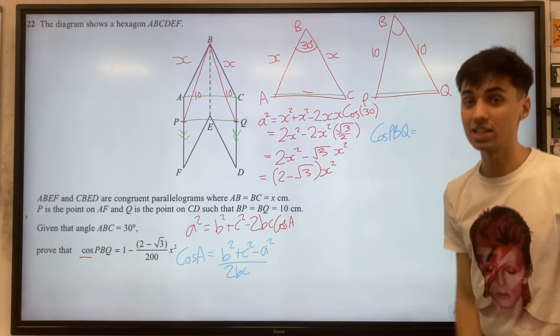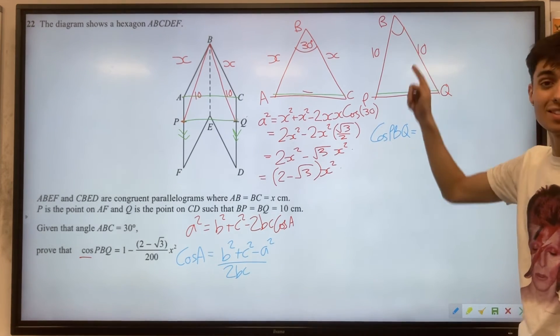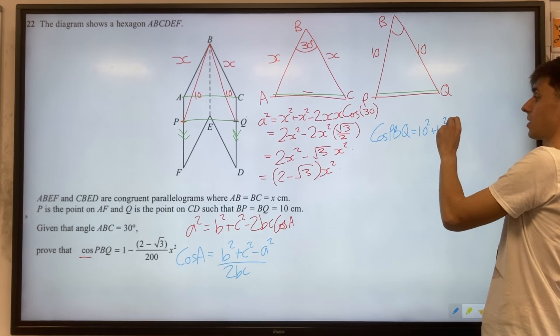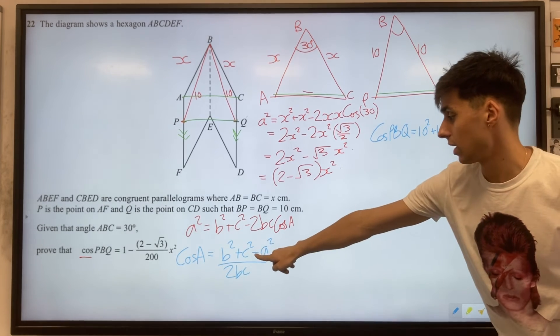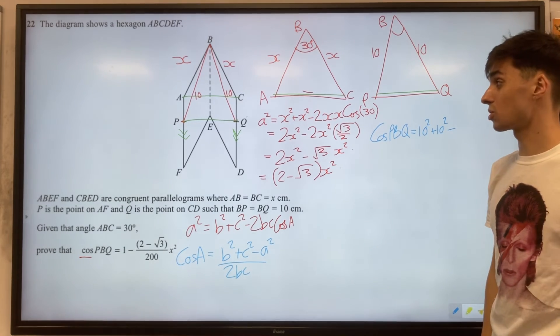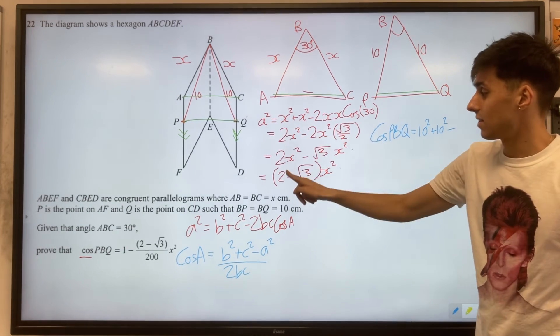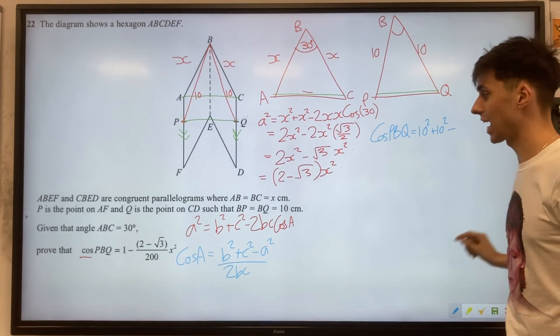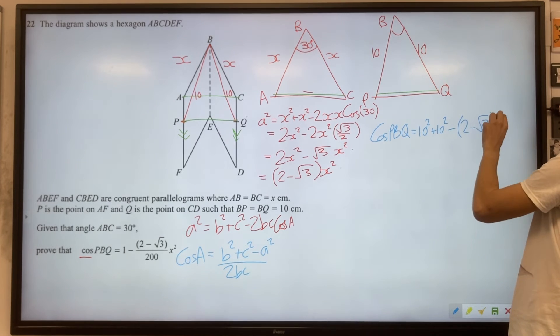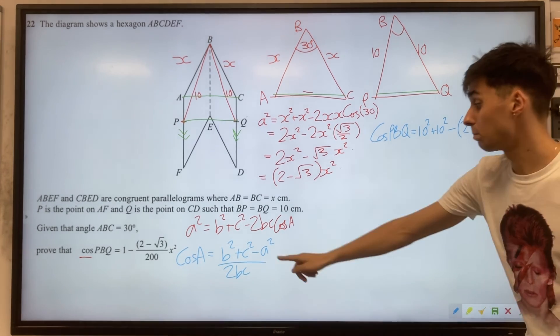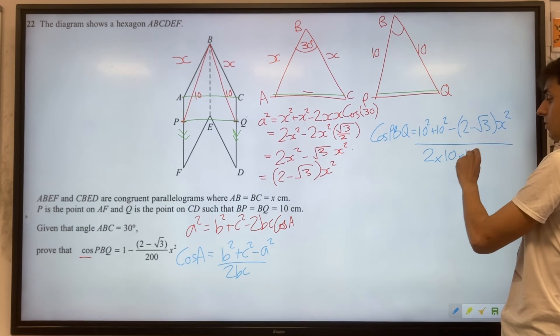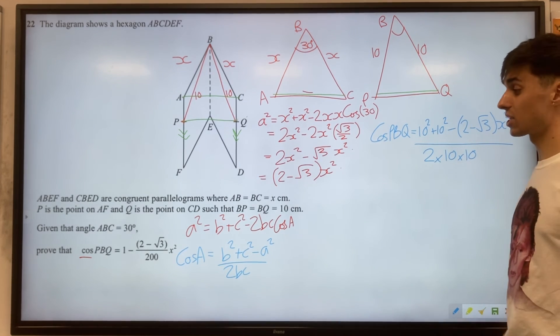Well, our B squared and our C squared are interchangeably 10 squared and 10 squared. So we have 10 squared plus 10 squared minus A squared. Well, that's this value here, isn't it, that we already worked out. Really important to note, our A squared is this exact value. We don't need to square it again. So we've got minus 2 minus root 3 X squared. And on the bottom, we're going to have 2BC. So that's 2 times 10 times 10.